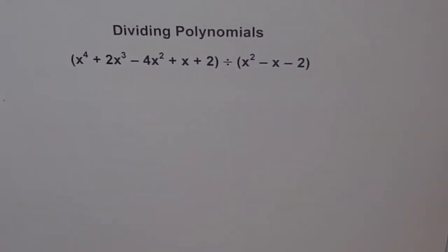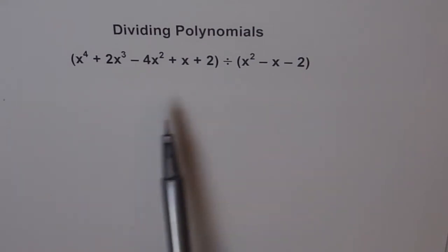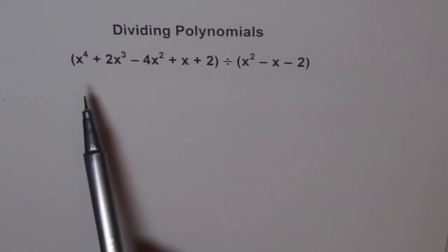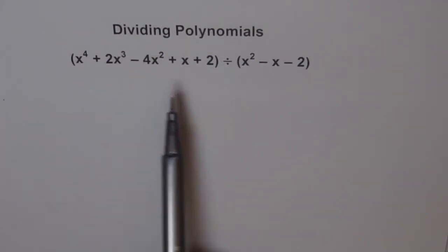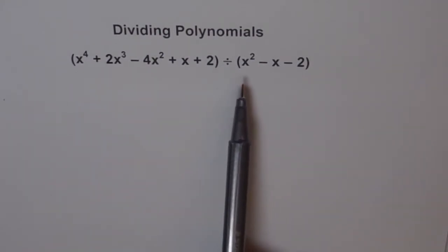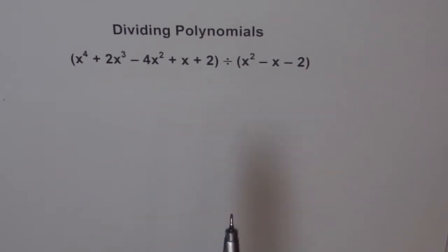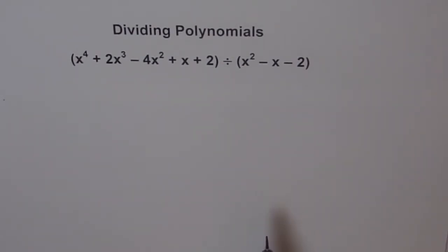Hello, here is an example of dividing polynomials. We are trying to divide a polynomial of degree 4 with a polynomial of degree 2. Can you tell me what would be the degree of the quotient here?